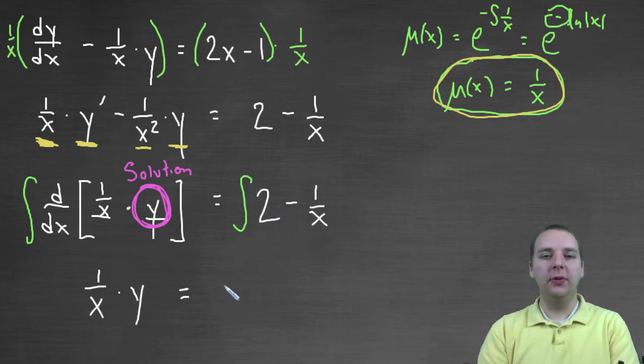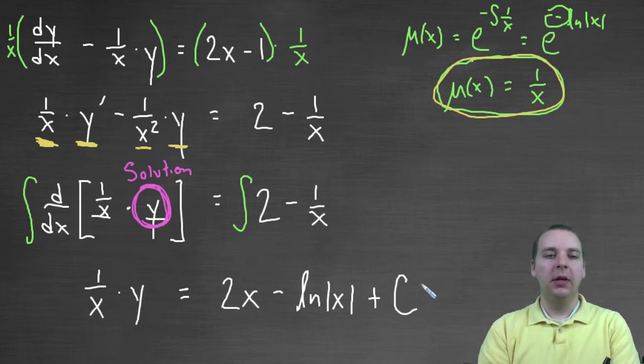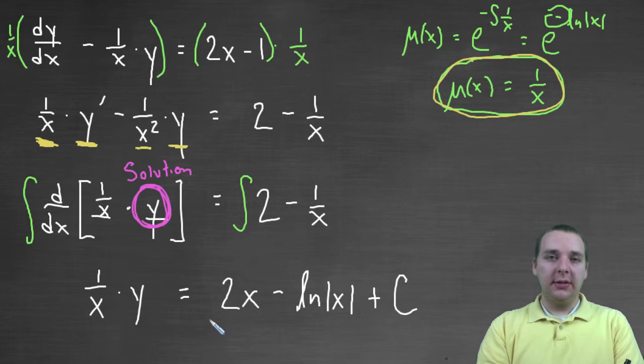Integral of two would be two x, and minus integral of one over x would be natural log of the absolute value of x. And let's not forget, because it's an indefinite integral, we would need a plus c in here somewhere.